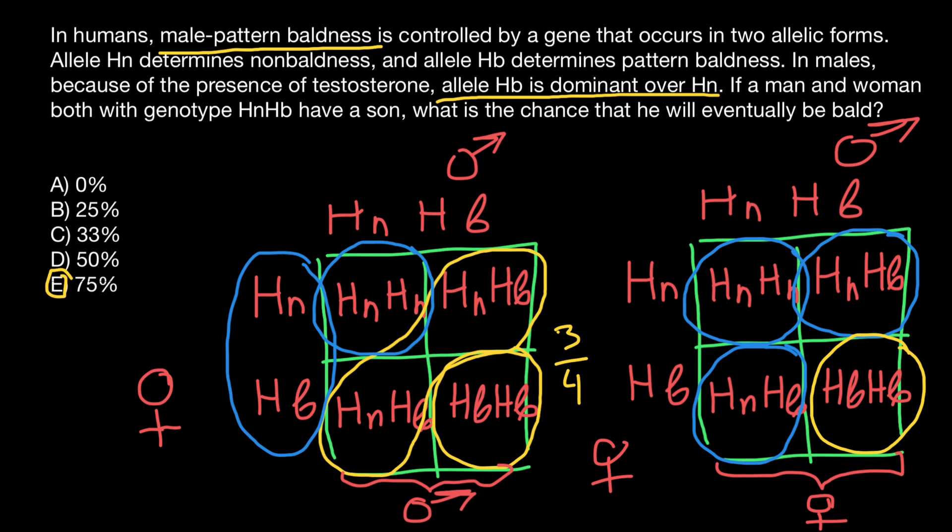But father, having the same genotype, would show partial baldness because in his case allele HB would be dominant. So we also can use the same colors here and here. Again, the mother and father have the same genotype. Mother would have normal phenotype and father would have partial baldness.